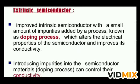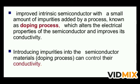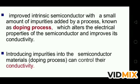An extrinsic semiconductor is an improved intrinsic semiconductor with a small amount of impurities added by a process known as doping. The doping process alters the electrical properties of the semiconductor and improves its conductivity. Whenever a pure semiconductor is made impure by adding impurities from outside, it is called the doping process, and this changes the behavior of the semiconductor so that it behaves like a conductor. The substance which is added to the pure semiconductor is called the dopant.